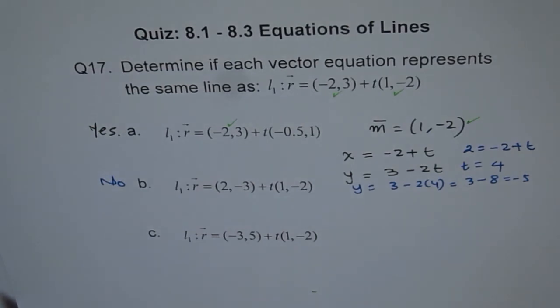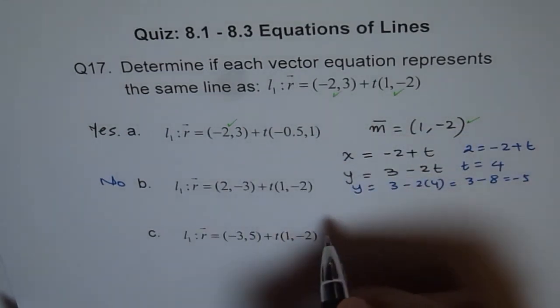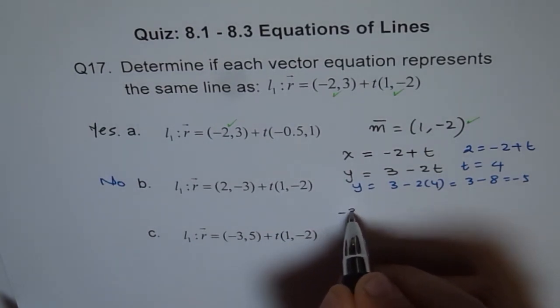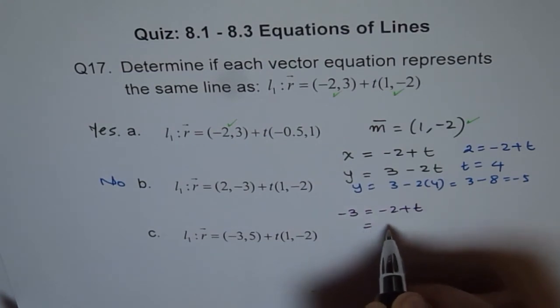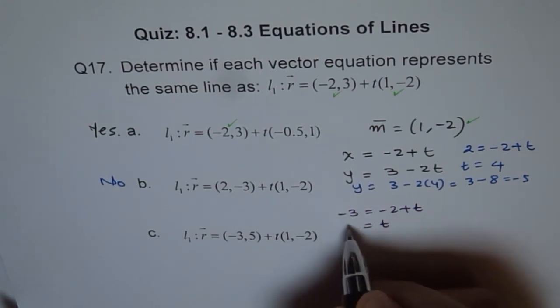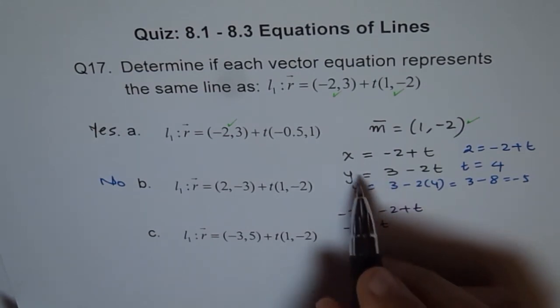Now let's do the next part. We'll have the same approach. Because the direction vector is same, we have to check if (-3, 5) lies on the given line. So if I put minus 3 for x, so we'll use the same equation. So minus 3 equals -2 plus t, which gives us t equals to minus 1.